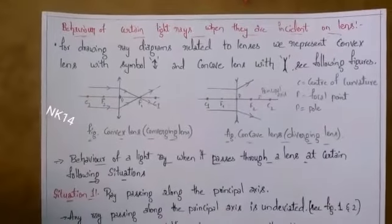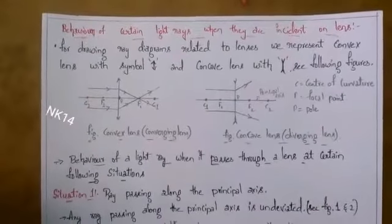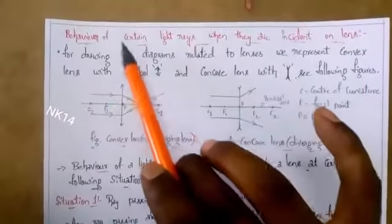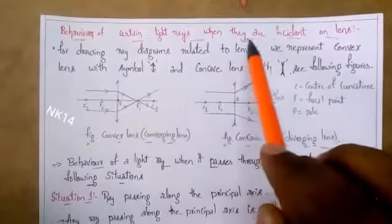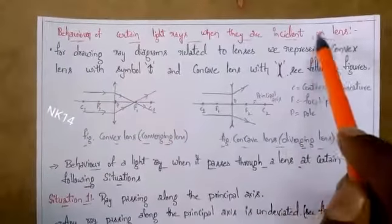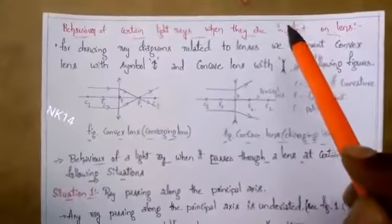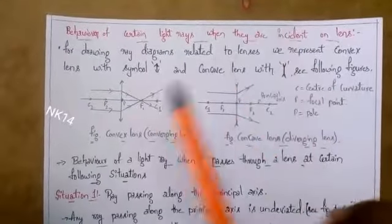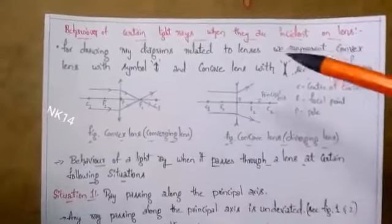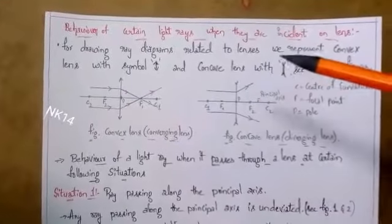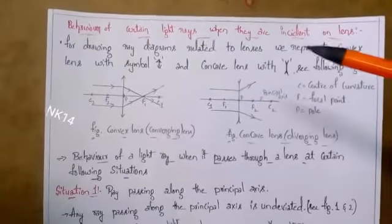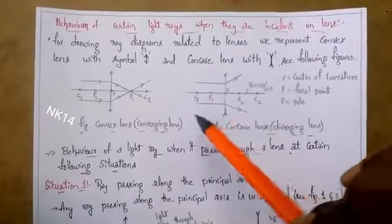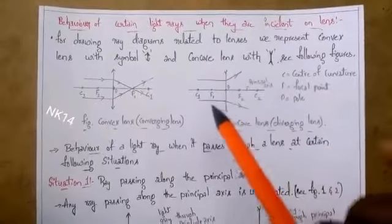The topic chosen is related to light rays — specifically, the behavior of light rays when they are incident on lenses. From this study, we are dealing with what happens when light rays fall on lenses. Before going into the topic, a few points will be shared about convex and concave lenses.